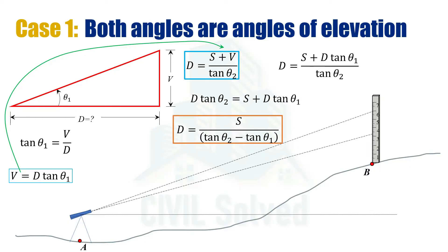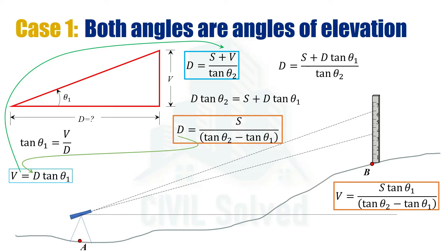The formula for d contains three variables: staff intercept s, theta 1, and theta 2. All three can be measured in the field — the staff intercept can be noted in the field, and theta 1 and theta 2 can also be noted in the field. Similarly, putting the value of d into the equation for v gives the resulting formula for v, which also contains the three field-measurable variables: staff intercept s, theta 1, and theta 2.